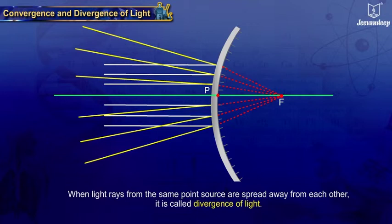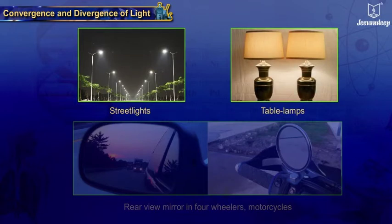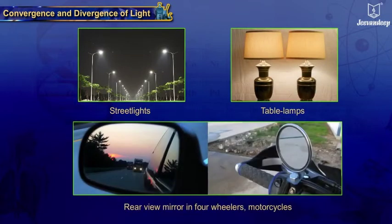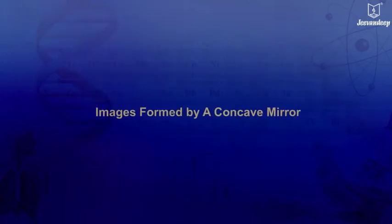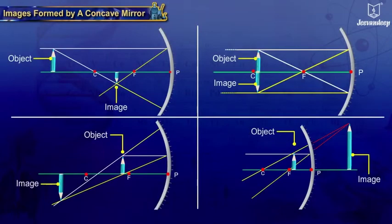Examples include street lights, table lamps, and as a rear view mirror in four-wheelers and motorcycles. Images formed by a concave mirror: the nature, position, and size of the image formed depends upon the distance of the object from the reflecting surface.